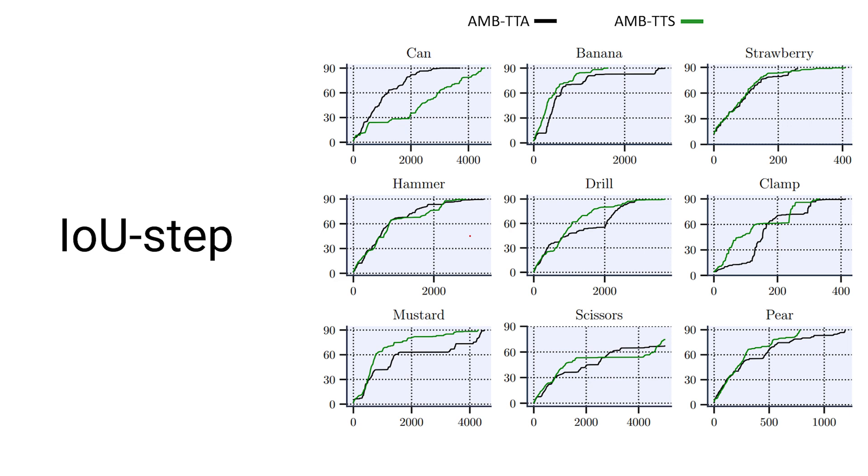Intersection over union step graph shows the number of actions required by each method to achieve two criteria, either covering 90% of various objects or reaching 5,000 actions. It's worth noting that YCB objects exhibit varying levels of complexity for exploration. For instance, a small and simple object like a strawberry may only require around 200 actions, while objects with more complex shapes, such as a hammer, may necessitate around 2,000 actions.